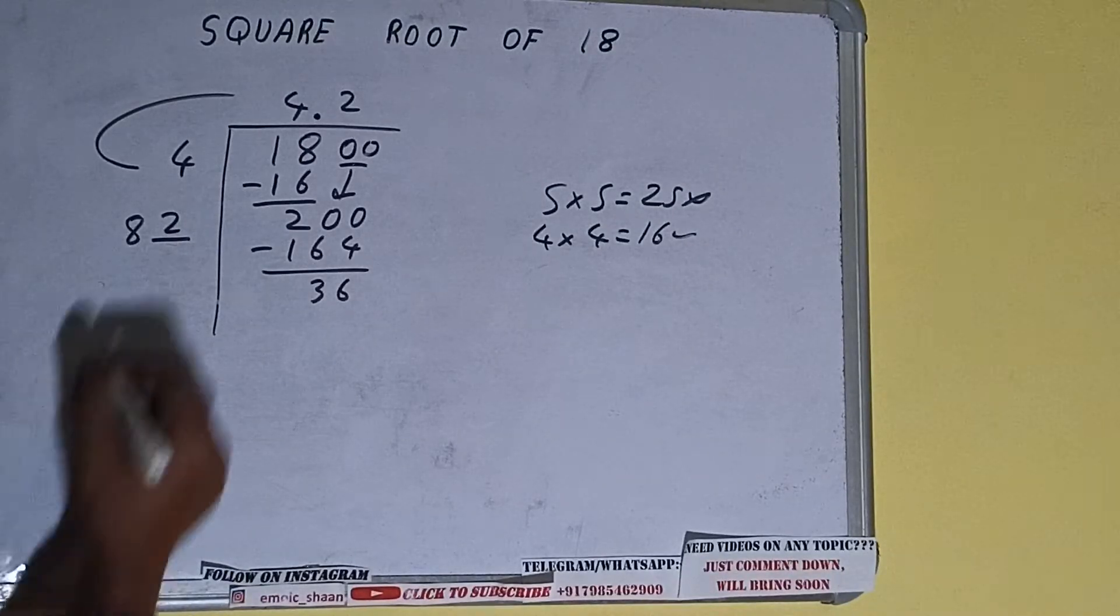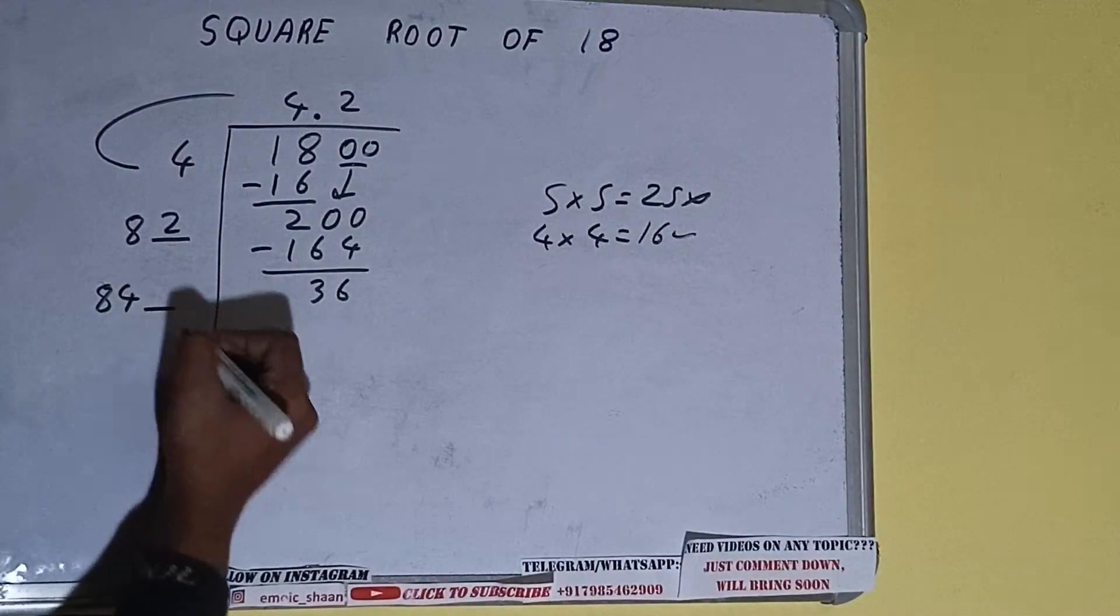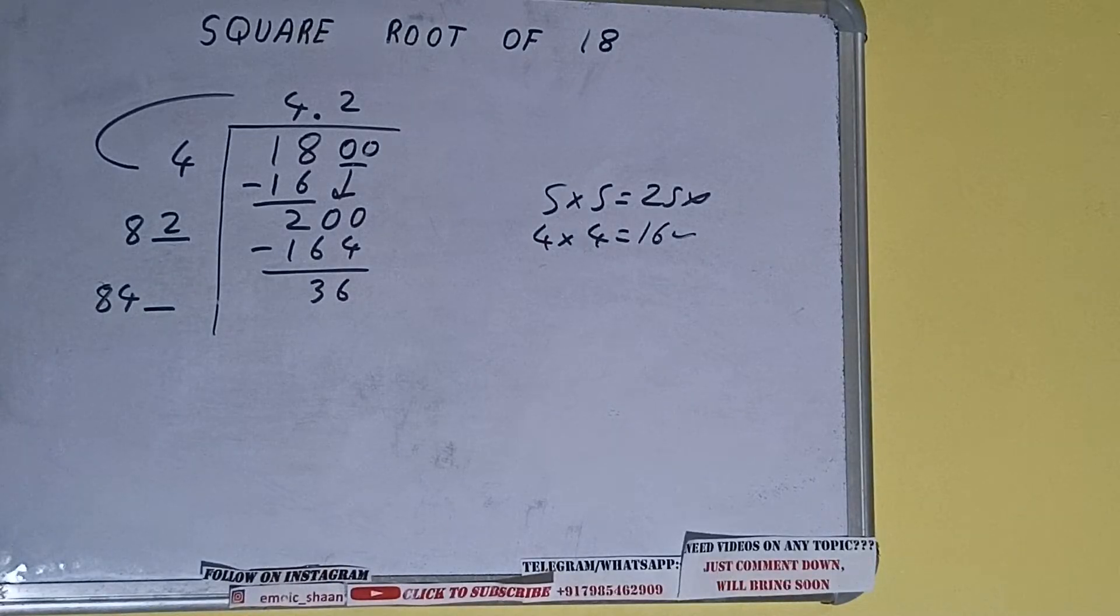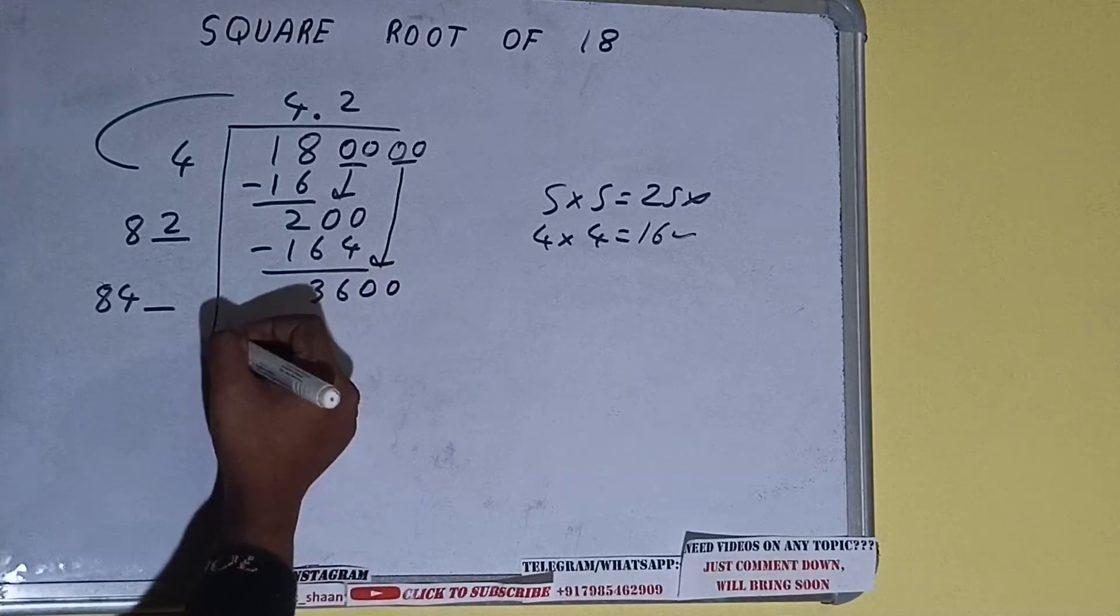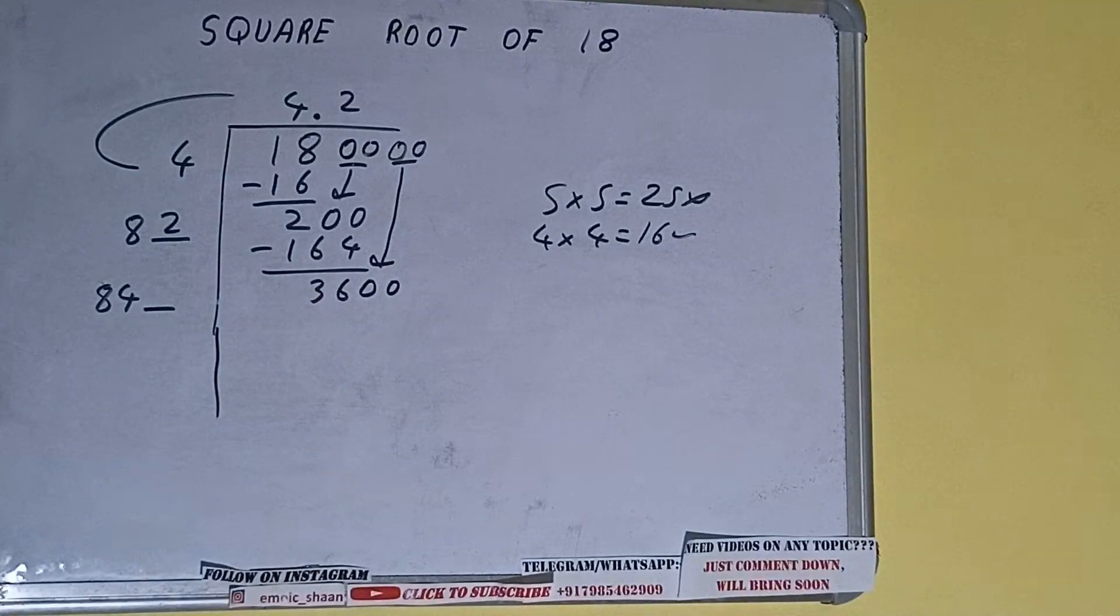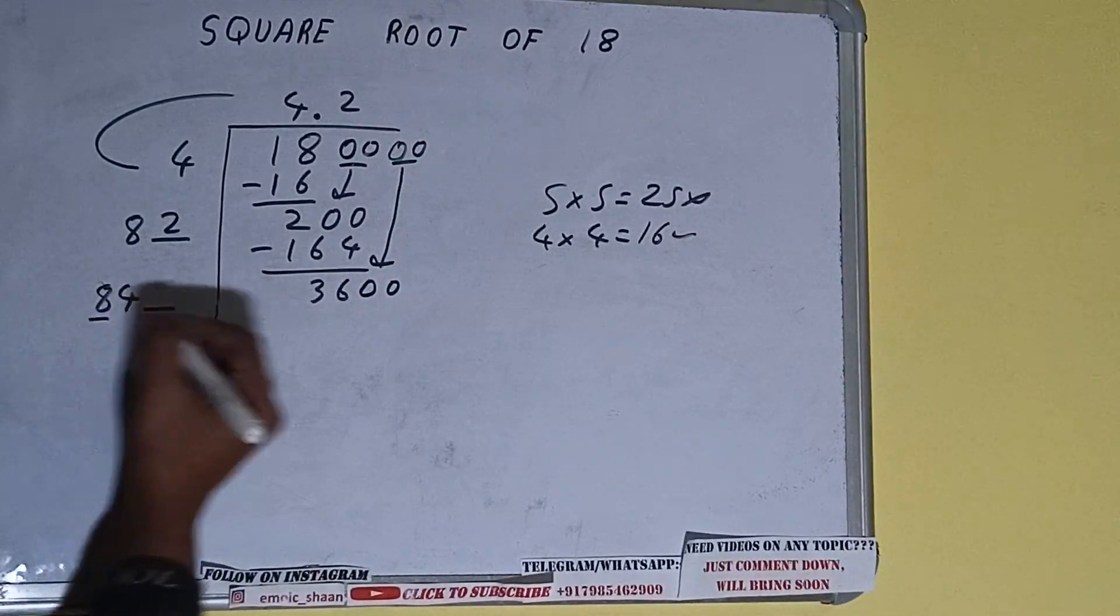Now 82 into 2 we did, so add both. 82 plus 2 will be 84 and 1 digit extra. This number we need to make it big, so bring the next pair of zeros down and it will be 3600.